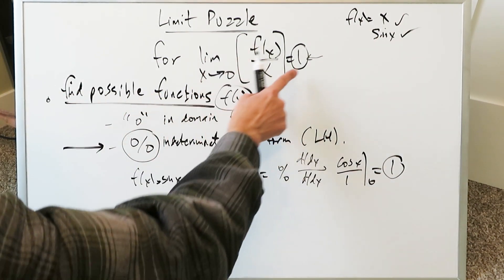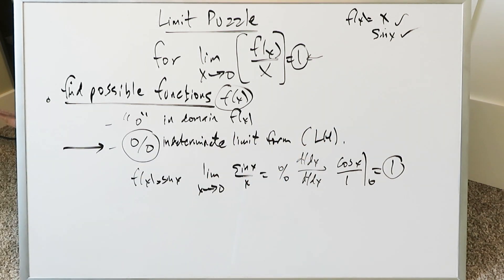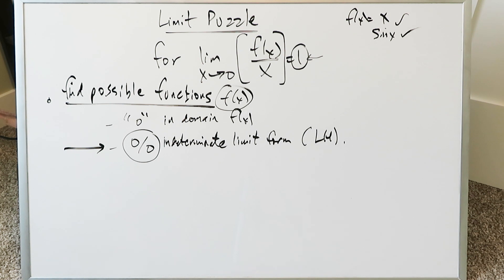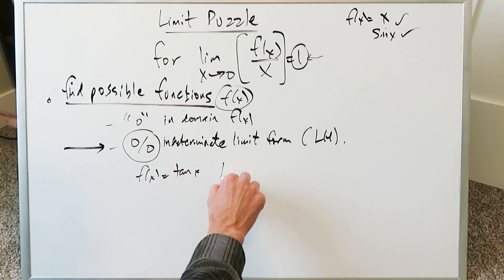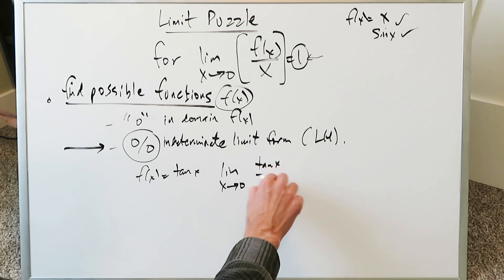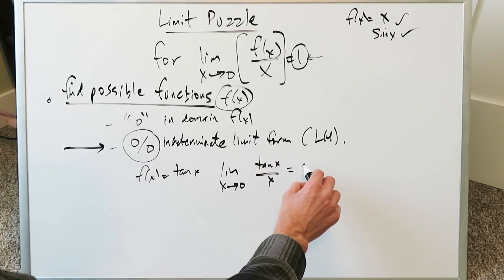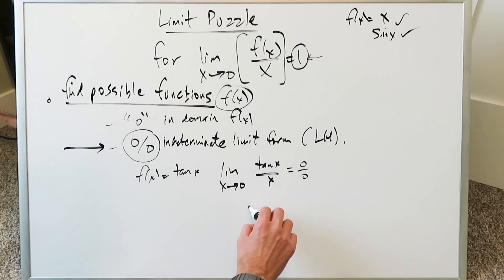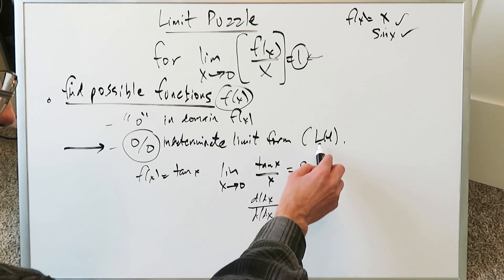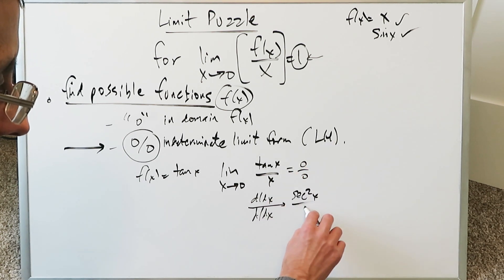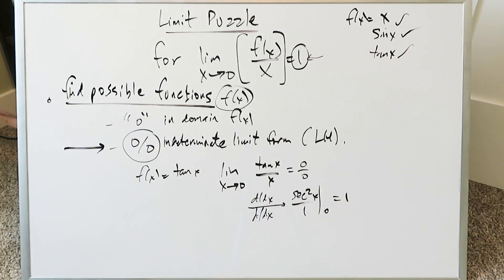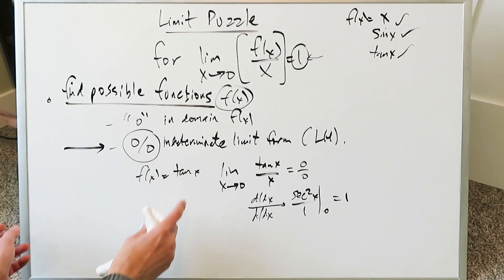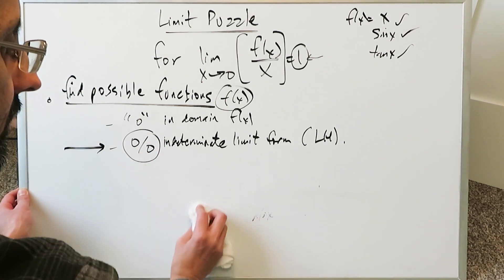Remember, we're finding possible functions f(x) that satisfy the limit. We've found x and sin x so far. Think of functions with 0 in their domain that lead to a 0/0 indeterminate form. How about f(x) = tan x? The limit becomes tan x / x. Plugging in 0: tan(0) = 0, giving 0/0. Applying L'Hôpital's rule: derivative of tan x is sec²x, derivative of x is 1. Plugging in 0: sec²(0) = 1. So tan x is another valid possibility, as it passes through the origin.